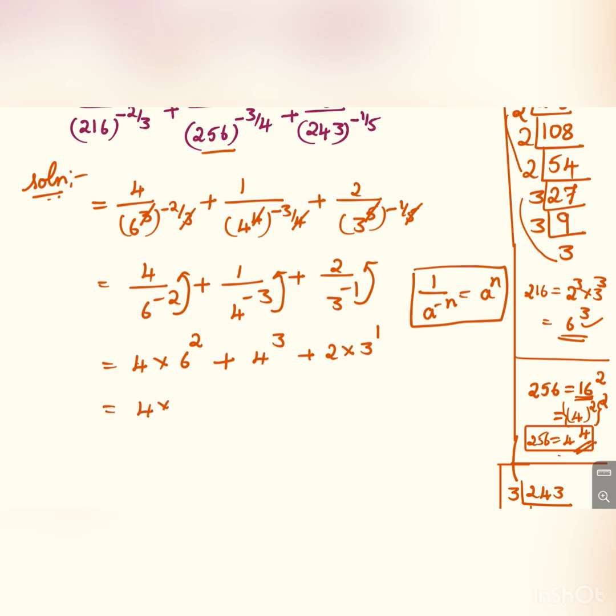This will be 4 into 6 square is 36, plus 4 cube is 64, plus 2. This is 6, and it will be 144. 4 into 36 is 144, plus 64, plus 6. And if you add all these, we will get 214.